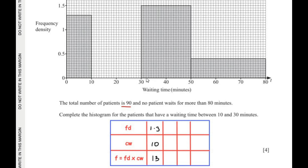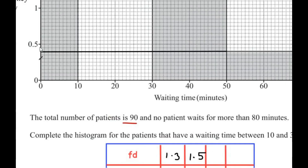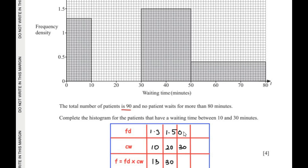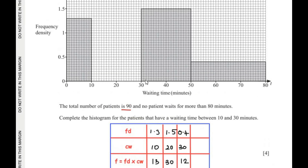For the interval 30 to 50, the class width is 50 minus 30 = 20, and the frequency density reads as 1.5, giving frequency = 1.5 × 20 = 30. For the interval 50 to 80, the class width is 80 minus 50 = 30, and the frequency density reads as 0.4, giving frequency = 0.4 × 30 = 12.